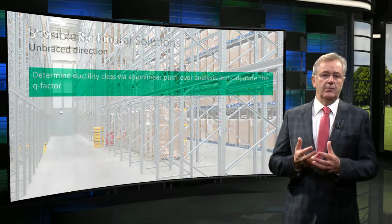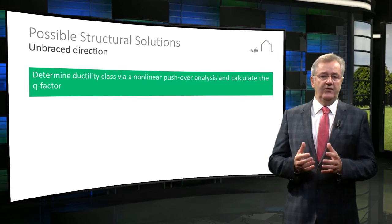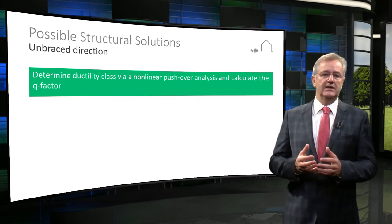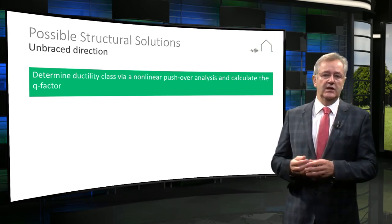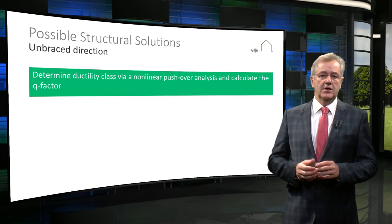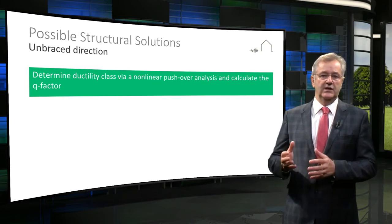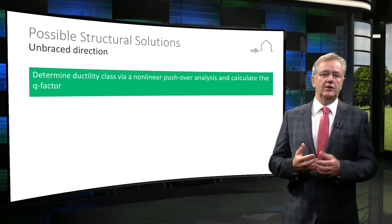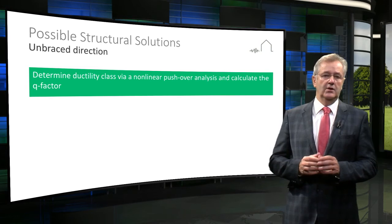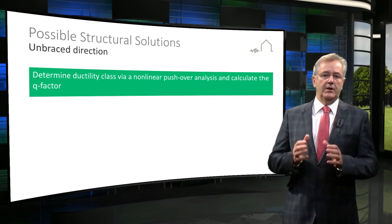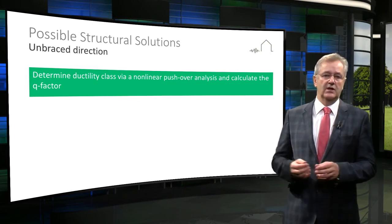How can we improve the structures for the effects of seismic loading in general? The effects of seismic loading on the structure is dependent on the dynamic behavior of that structure and the ground peak acceleration at the location of the building. Solutions are dependent on the ductility class of the structure. The ductility class of a steel structure can be determined by using the non-linear pushover analysis, and from that to calculate the behavior factor, the so-called Q factor. By using the classification in Eurocode 8, you can see what ductility class applies to that steel structure.